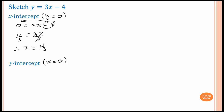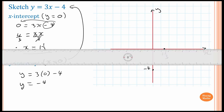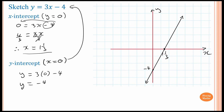The next step is to find the y-intercept, which means x is equal to zero. Substitute x = 0 into the equation: y = 3(0) - 4 = 0 - 4, so y is equal to negative four. Now we can graph it. The x-intercept is one and a third, roughly here, and the y-intercept is negative four, roughly here. Now we just join the two points together. This is y = 3x - 4.